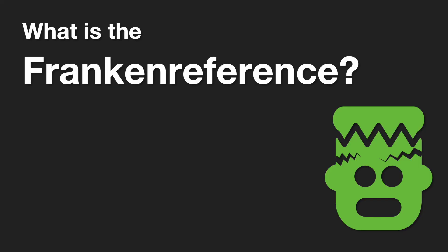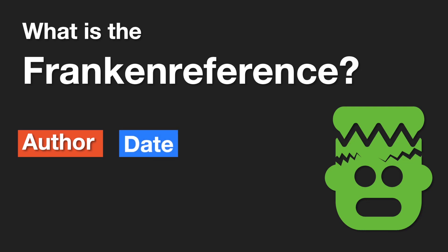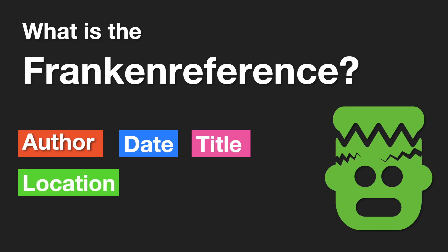If you're completely stuck and don't know how to reference a source — which sometimes happens when you find things online — you can create what's called a Franken-reference. This is where you take all the different parts of a reference and put something together that roughly relates to APA style. You can find out more in our referencing subject guide and the APA style blog. A Franken-reference must include at the very least: the author, the date of publication, the title of the source, and the location where it can be accessed — usually a URL.